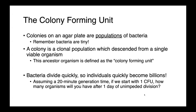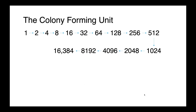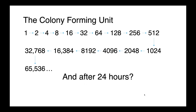Bacteria divide really quickly — individuals can quickly become millions or billions of organisms. If we assume a 20-minute generation time, which is sort of our archetypal E. coli, and we start with a single CFU — one colony forming unit — how many organisms would you have after one day of unimpeded division? Starting with that one colony forming unit and allowing it to double every 20 minutes, after 24 hours we would have an absolutely astronomical number: 4.72 times 10 to the 21.